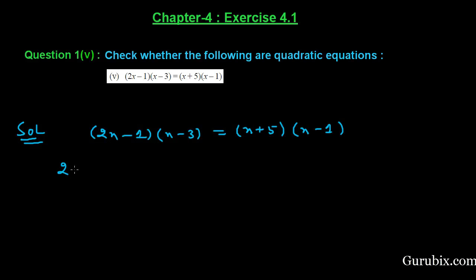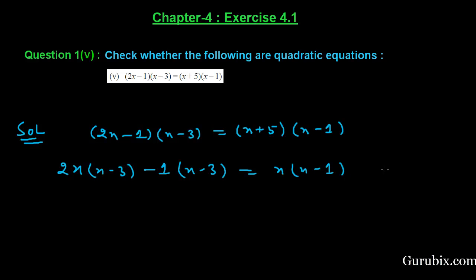Now we shall multiply -1 with (x - 3). On the right-hand side, we multiply x with (x - 1), and then multiply 5 with (x - 1). Expanding: 2x·x gives 2x², then -6x - x + 3 on the left side.